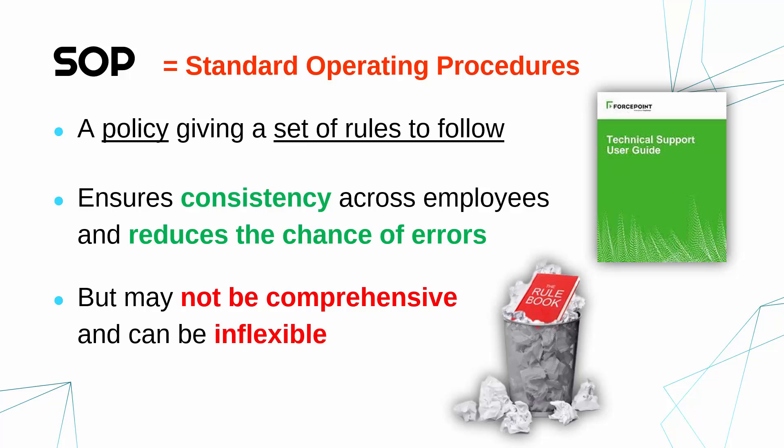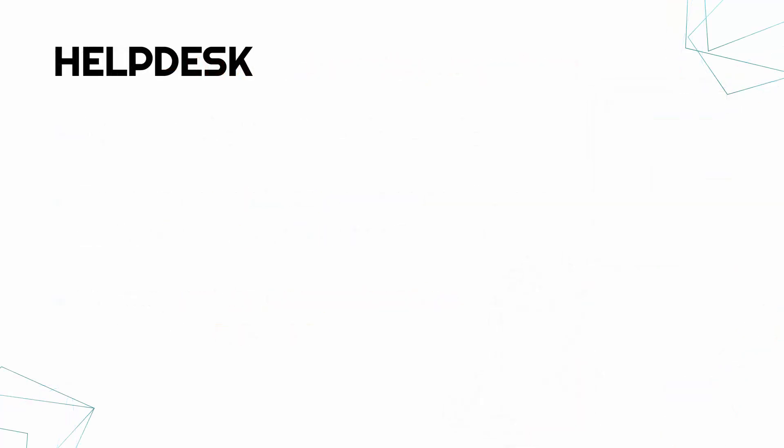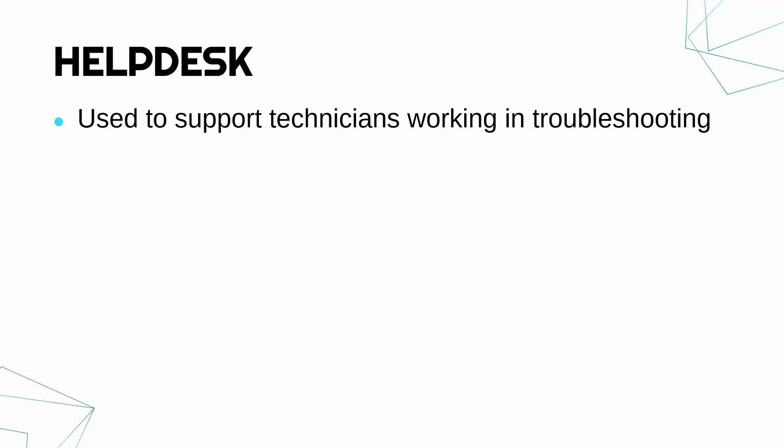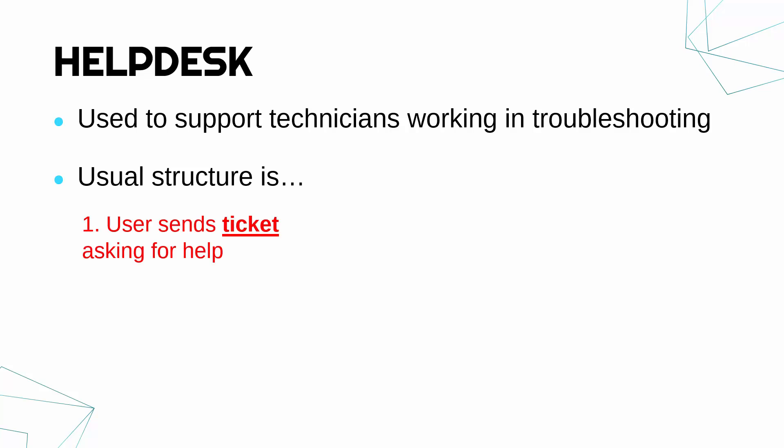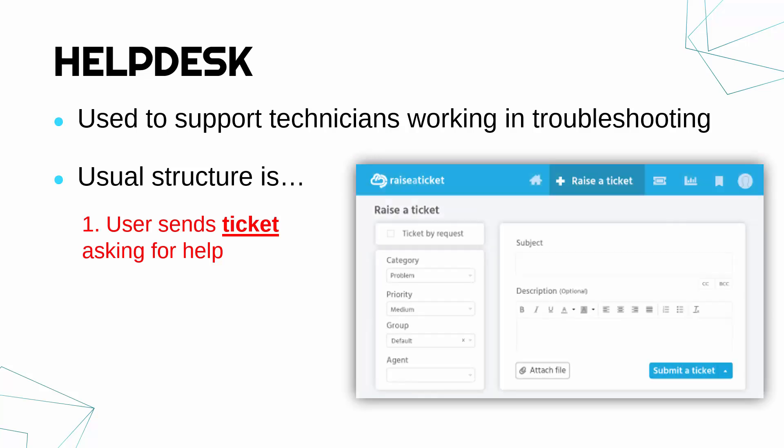The final system I want to cover is helpdesks. This is a really generic bit of software which can vary quite a bit. Helpdesk software is all about supporting — usually what we'd call technicians — working in troubleshooting. Troubleshooting is where you're finding and trying to fix issues. Most helpdesks use what we call a ticketing system. The way this works is: first of all, the user comes across some issue — their email isn't working, the computer won't turn on, etc.